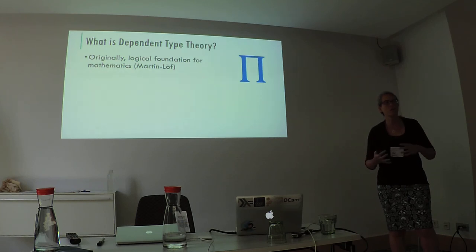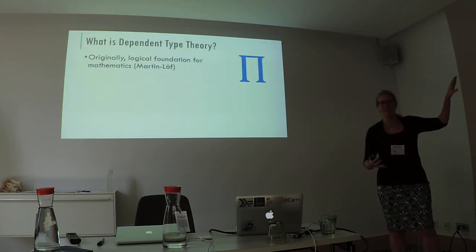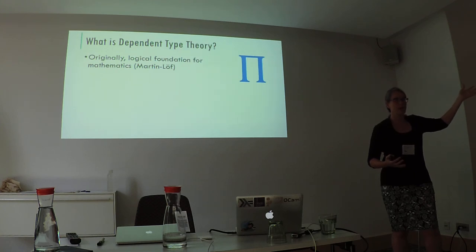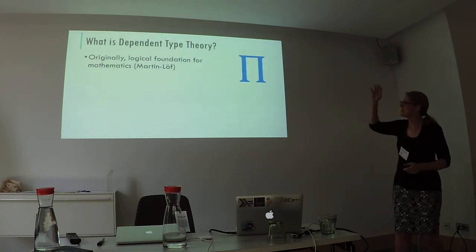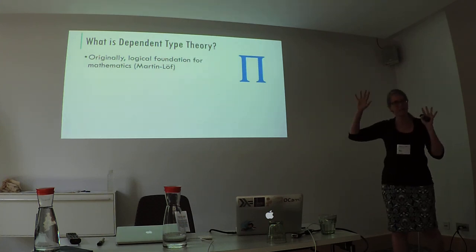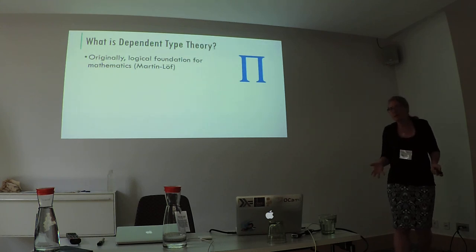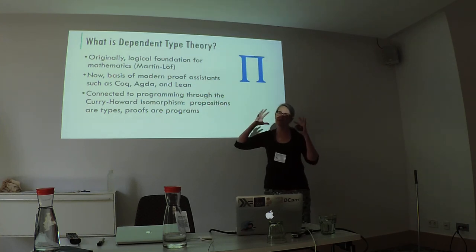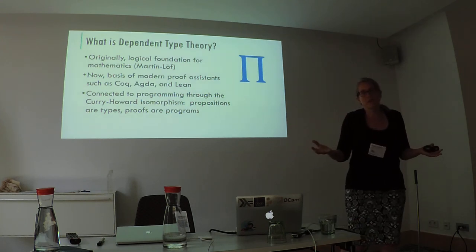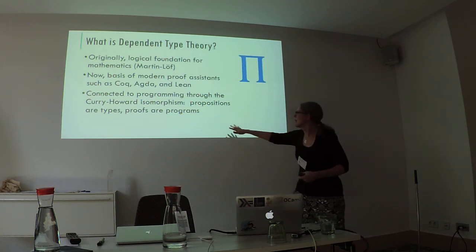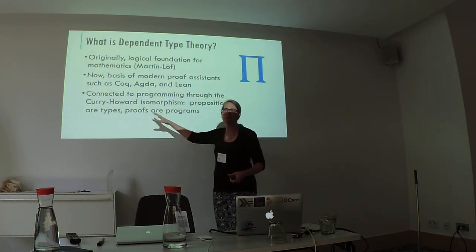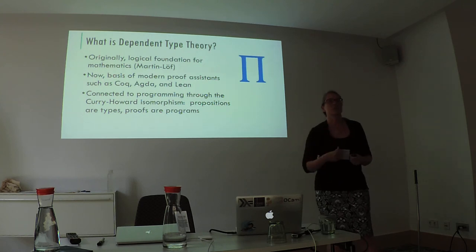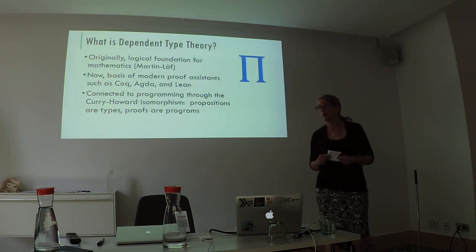If you went to the first invited talk at ICFP this morning, you got a fabulous introduction to Martin-Löf type theory by André Bauer. But even if you didn't, it could be a little bit confusing — how does this foundation of logic relate to programming? It does because of this connection called the Curry-Howard isomorphism: the idea that in type theory we represent proofs as programs and propositions as types. So any typed programming language, we can start to think about not just as a type programming language, but also through its relationship to logic.